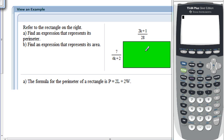Part A says find an expression that represents its perimeter, and part B says find an expression that represents its area.